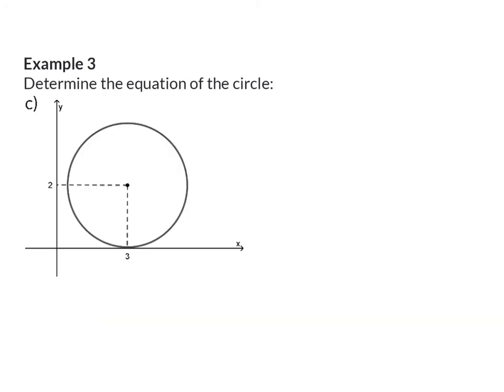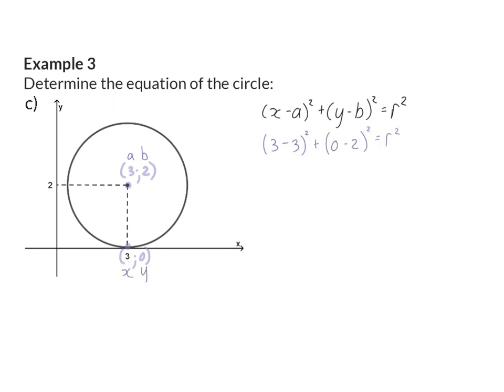In example C, we are given a sketch and need to find the necessary information from it. The center is at (3, 2). We also need a second coordinate, and the bottom point is on the x-axis at (3, 0). This is similar to example A: substituting A and B as 3 and 2, and x and y as 3 and 0, simplifies to R squared equals 4. The final equation is (x minus 3) squared plus (y minus 2) squared equals 4.